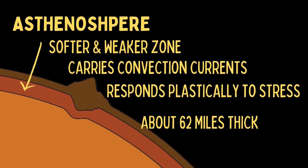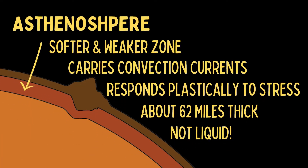These plates can move around because the lithosphere sits on top of a softer, weaker zone called the asthenosphere. The asthenosphere is the top of the mantle, about 62 miles thick, and hotter and weaker than the lithospheric mantle above it. It responds plastically to stress, meaning it will flow under pressure over long periods of time. It also behaves like a fluid in that it can carry convection currents, but it is not liquid.